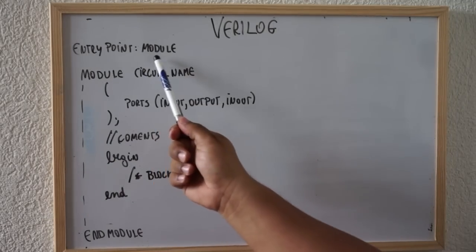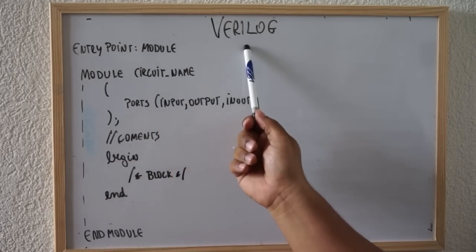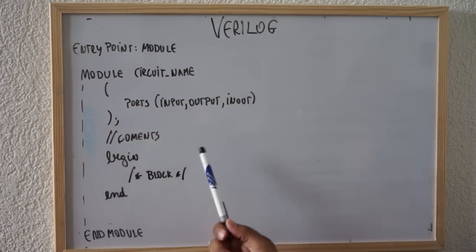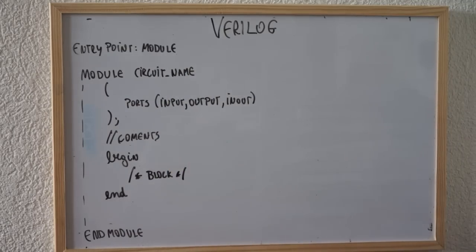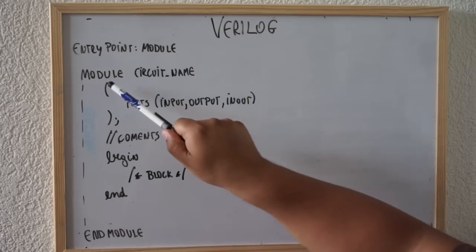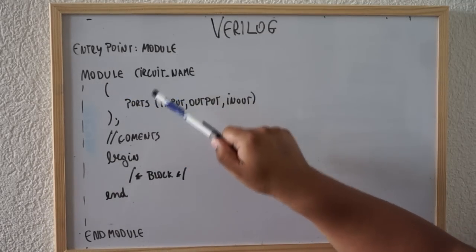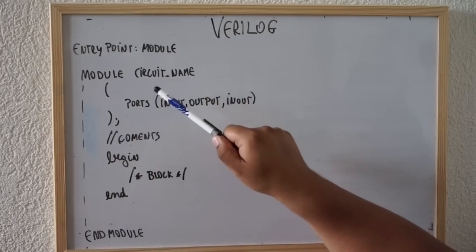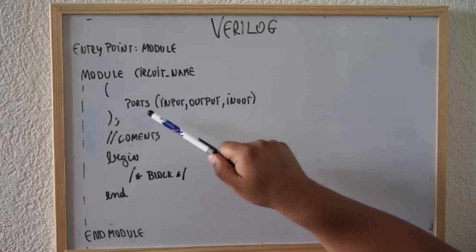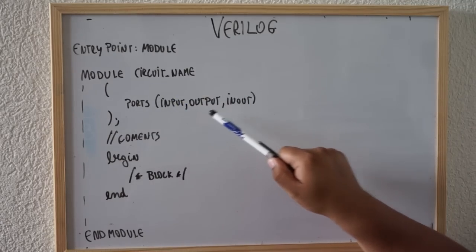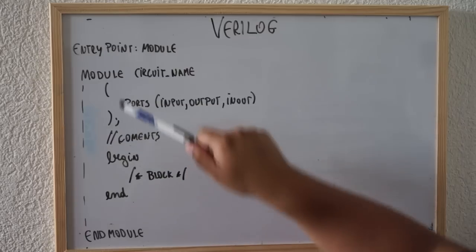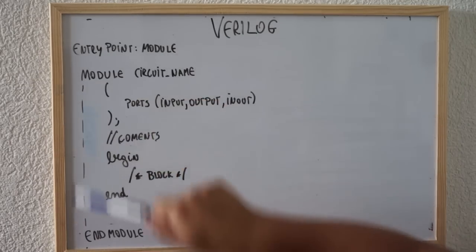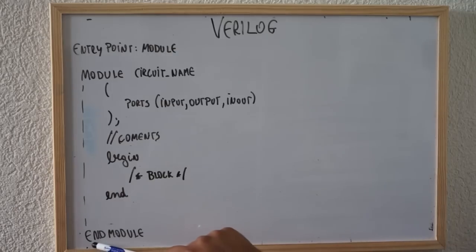The entry point of every Verilog code will be a module. A module can be a circuit that you are going to create or a test bench. Let's see the format. You say module, then the circuit name. Between parentheses you have the ports of your module. The ports can be input, output, or inout. The module starts and finishes between module and endmodule.